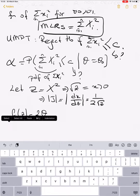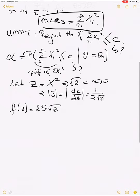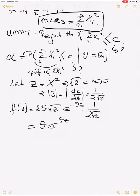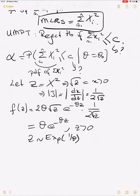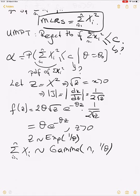The PDF of Z becomes: 2θ·√z · e^(-θz) · (1/(2√z)) = θ·e^(-θz) for z > 0. This is an exponential distribution with mean 1/θ. Therefore, Σxᵢ² (i=1 to n) is distributed as Gamma(n, 1/θ).